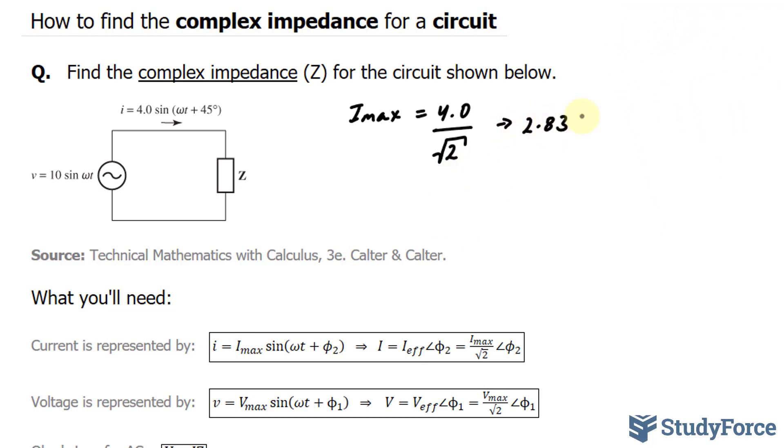2.83 represents my effective current, and my angle is 45 degrees. To write this down in complex polar form: I = 2.83 ∠45°.